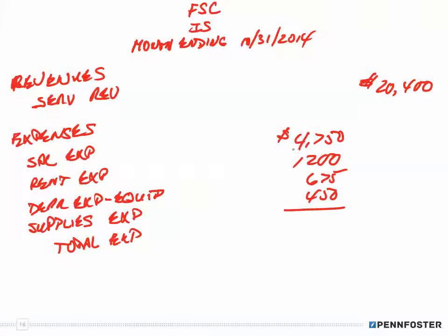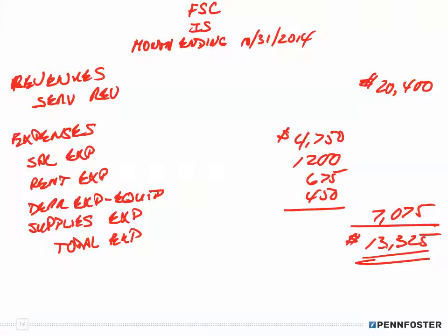Since this is a mathematical calculation, we put the numbers in the left-hand column and the solution in the right. We underline to show the mathematical calculation. The $7,075 is our total expense, so we do $20,400 less $7,075, which gives us $13,325. Since that's the end of the calculation we double underline and put a dollar sign. Since revenues are greater than expenses, that's a profit, so we write net income. This $13,325 is going to end up on our statement of retained earnings.